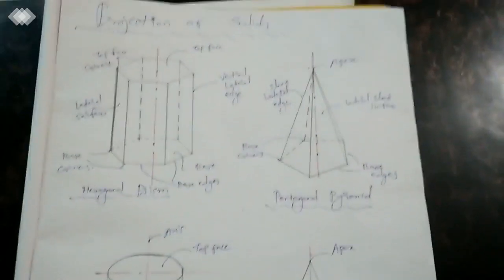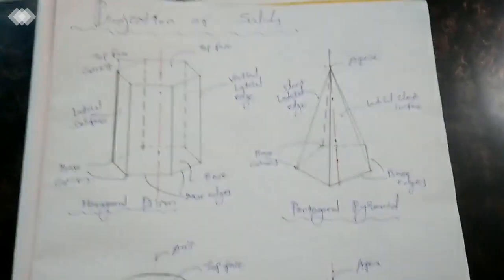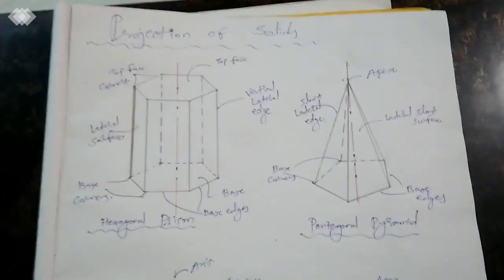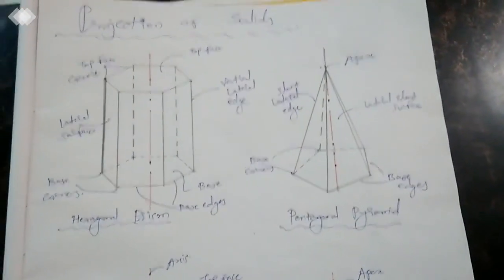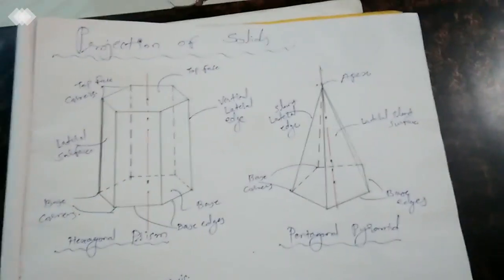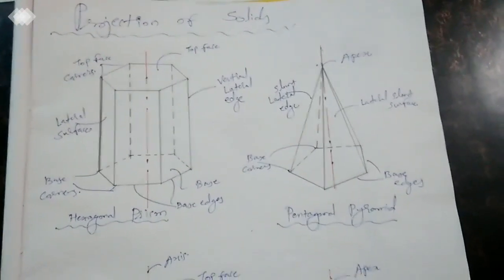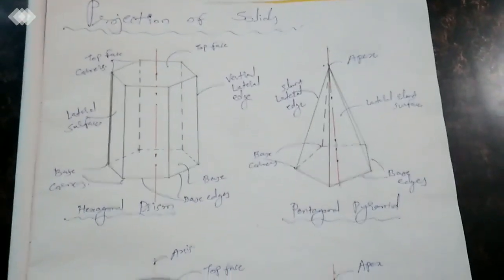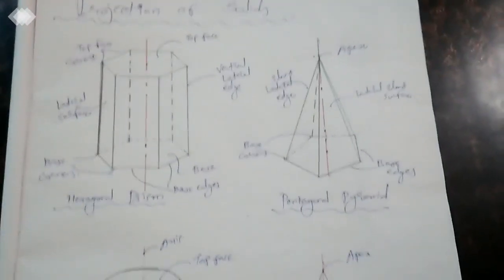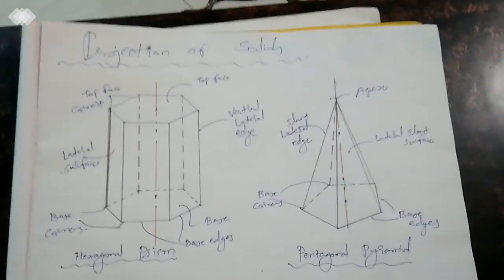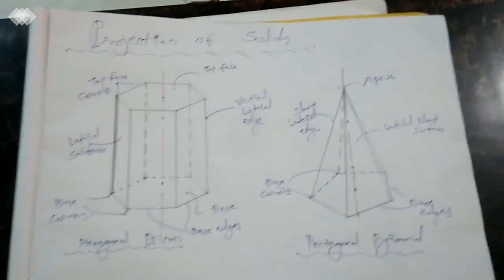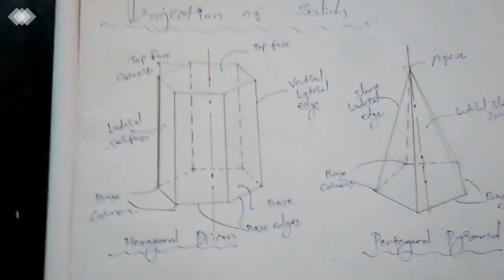Good evening. Today we will see the last but one chapter, that is Unit 4 — Projection of Solids. Earlier we have seen projection of lines as well as projection of planes. Now we will see the different kinds of solids we have in our syllabus, which I have drawn here, and we will go through their nomenclature one by one.